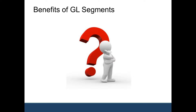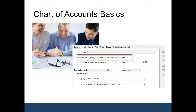For example, you could show an account number that's eight digits total — a first segment that's four digits and a second segment that's also four digits. That way you have the option of tracking account number 4105 and breaking that out into several different categories, whatever you want to call those segments.